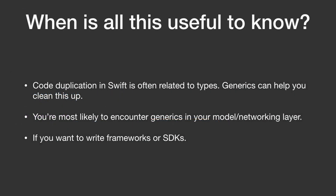So when is all this really useful to know? Code duplication, for me at least, is often related to the type system — I want several things that are basically the same but not quite. Generics are usually a good way to clean that up. You're most likely to encounter these in your model or networking layer. In the UI it's usually more specific, but when building something for networking or data stores, it's often useful to have something very generic. And if you want to write frameworks or SDKs, this is pretty much essential, because you want those to be flexible, stable, and robust.